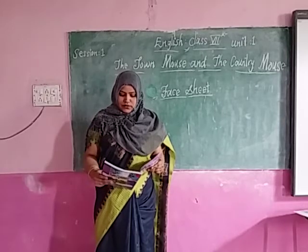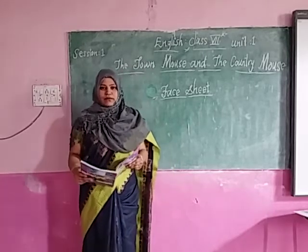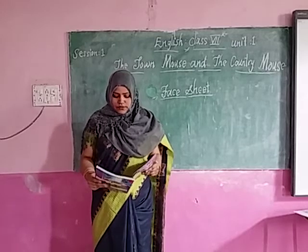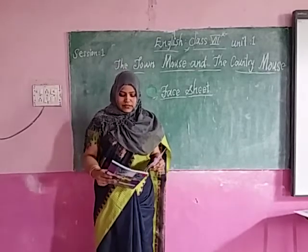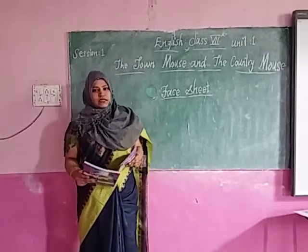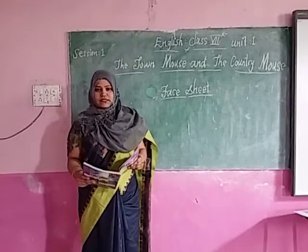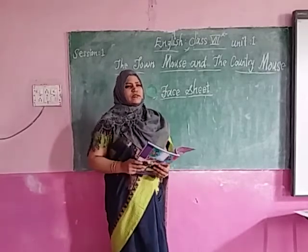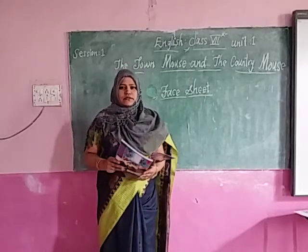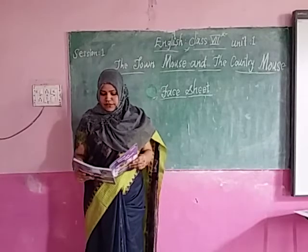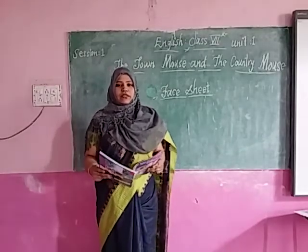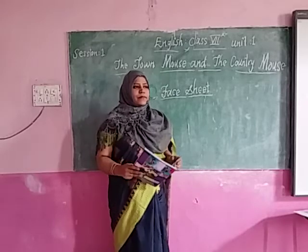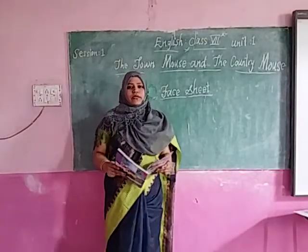Most people in the village are farmers — they cultivate crops and grow them. They like the agricultural life. Most people are farmers and agricultural laborers. Whereas in the city, there are different types of jobs. Different types of people work in different firms, companies, and institutions — they work in different fields. In the village side, people usually do agricultural work, while in cities, people prefer to do jobs in companies.